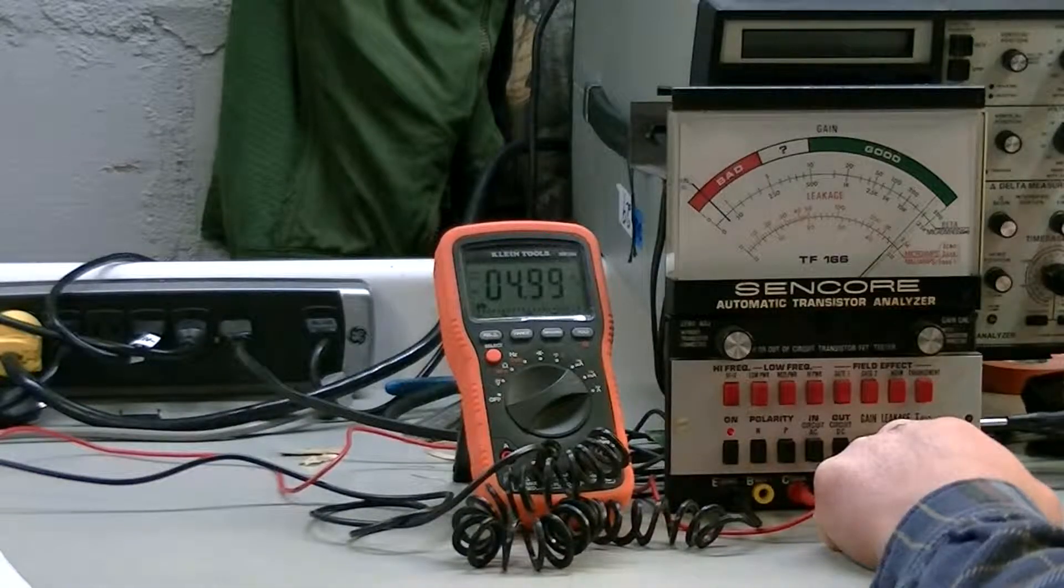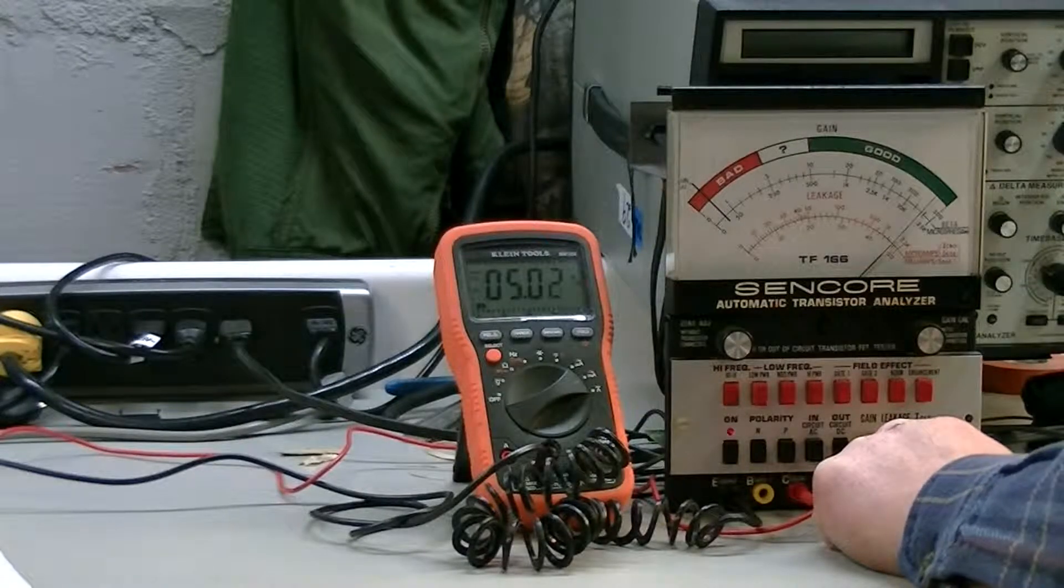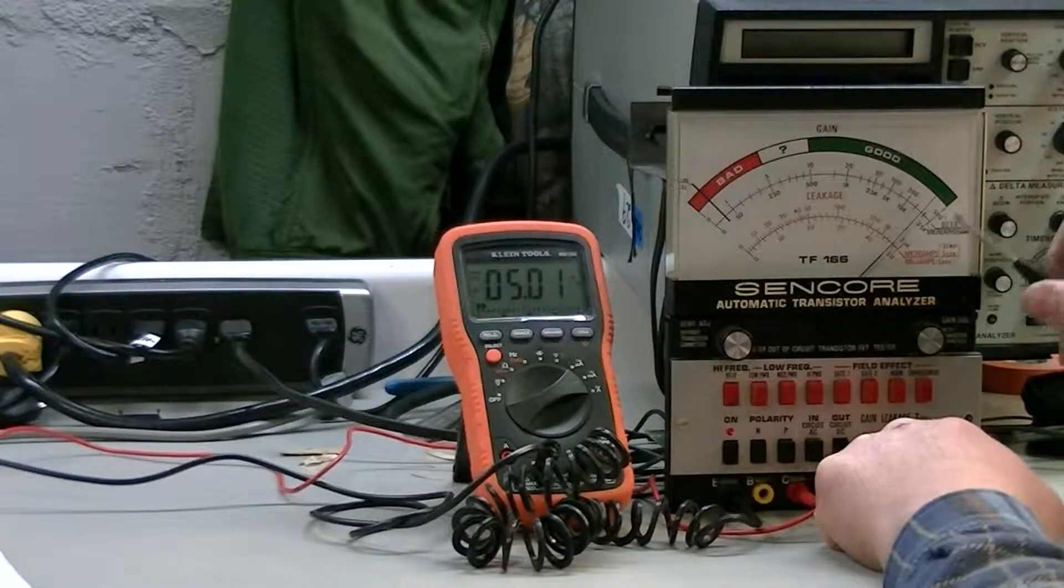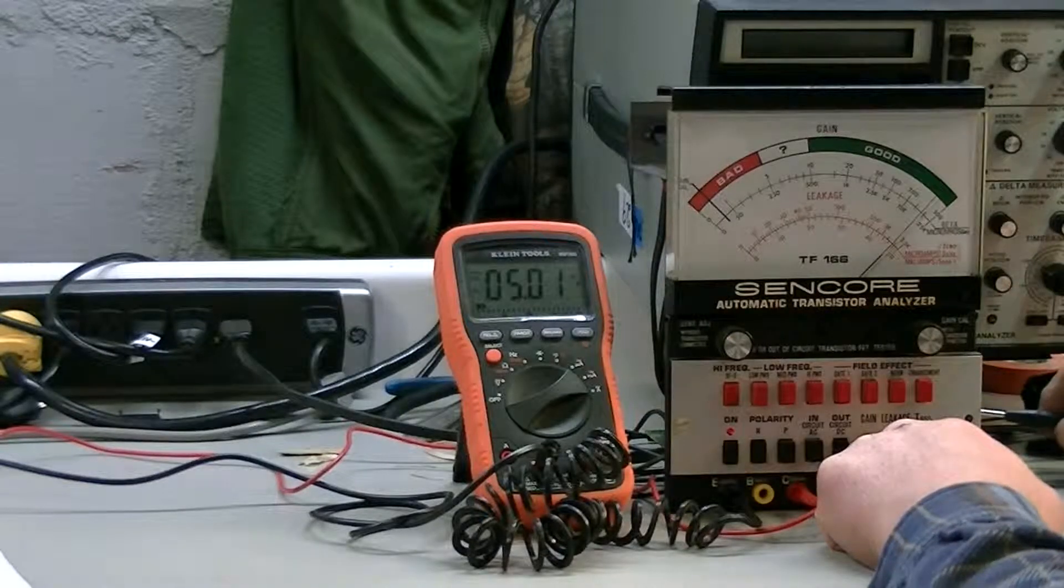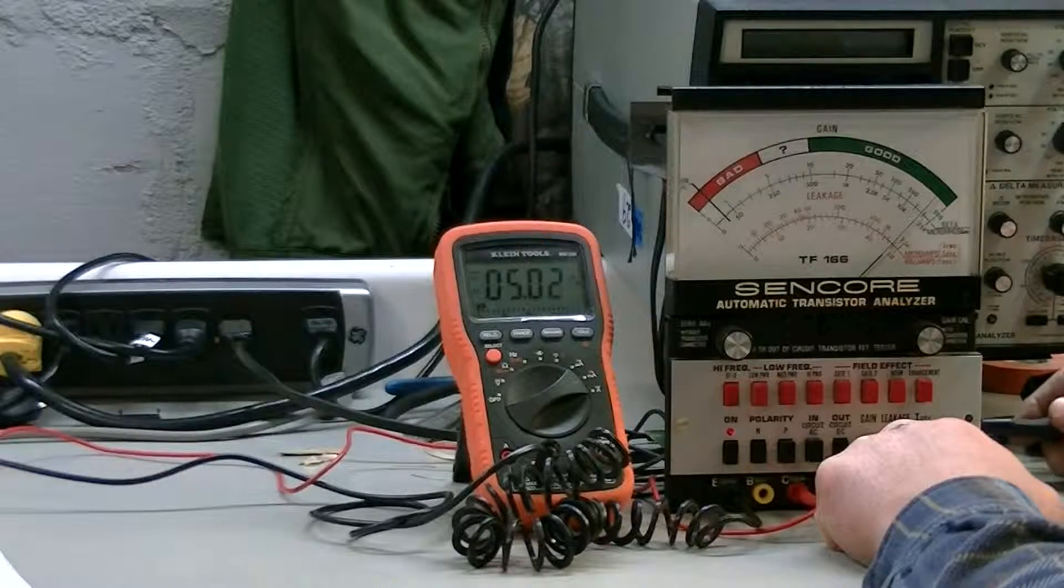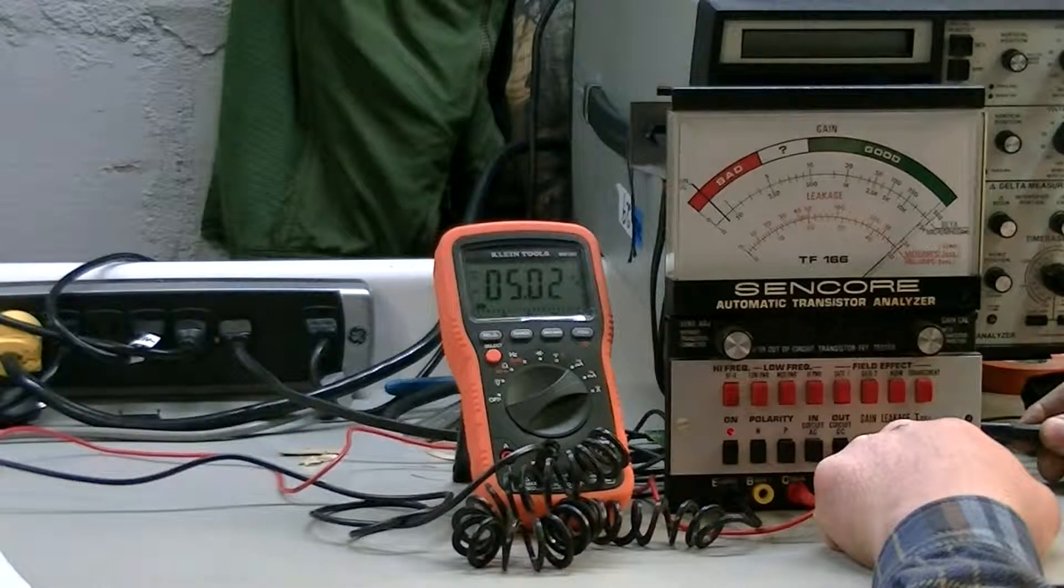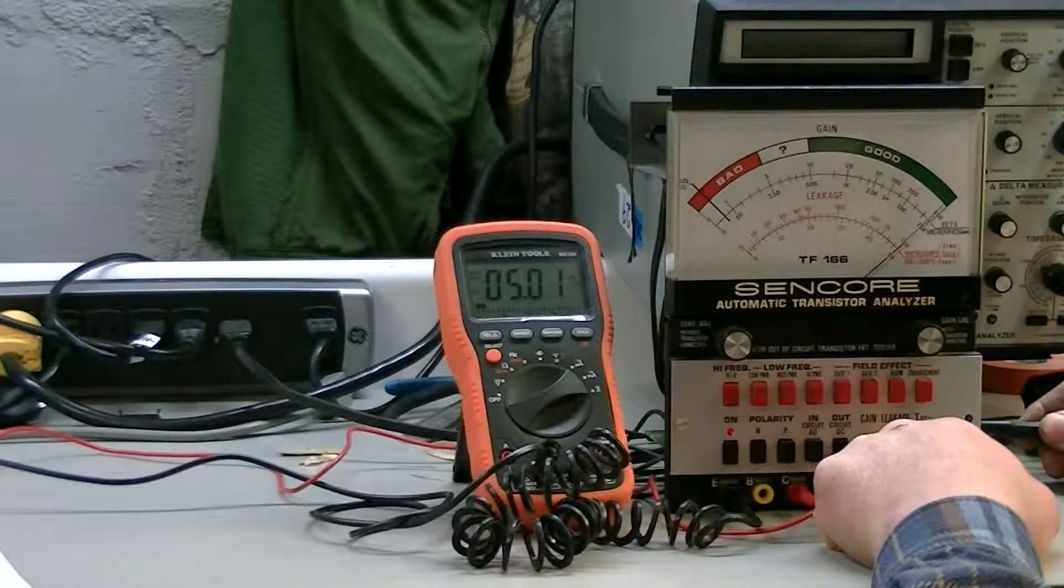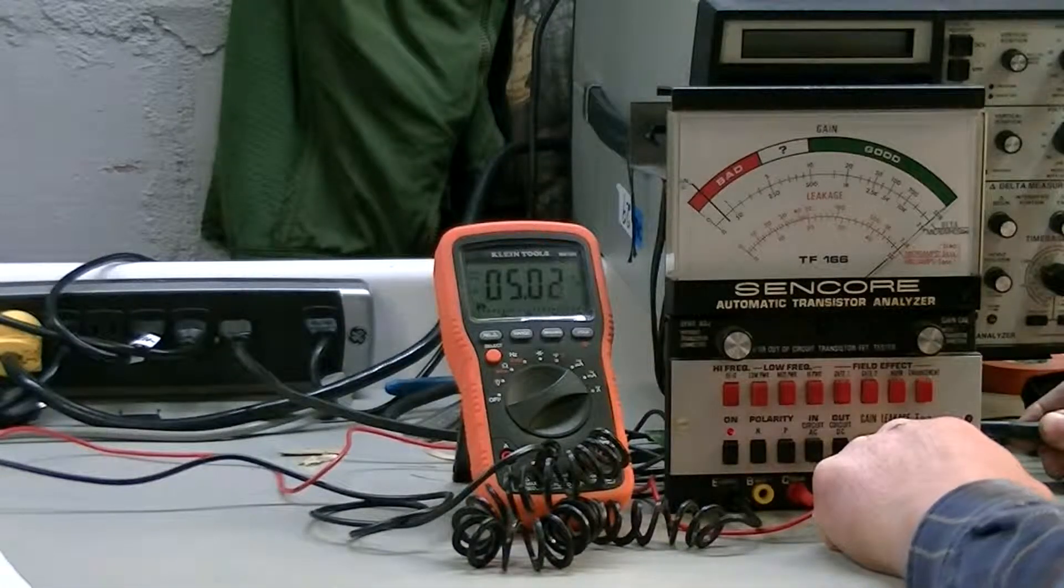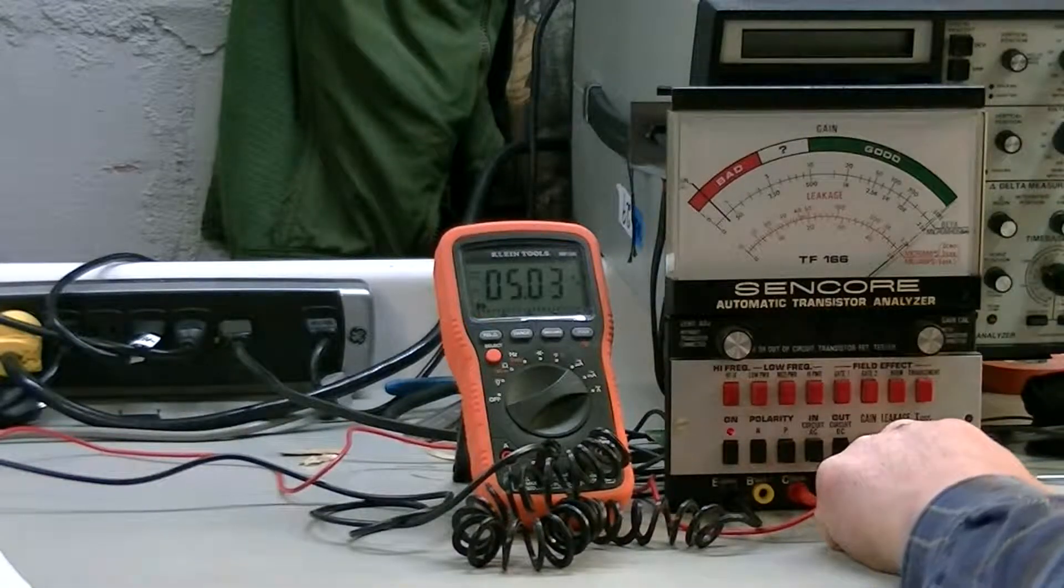And there's another pot right beside it. It is R106 and you adjust that for a beta of 500. Okay,